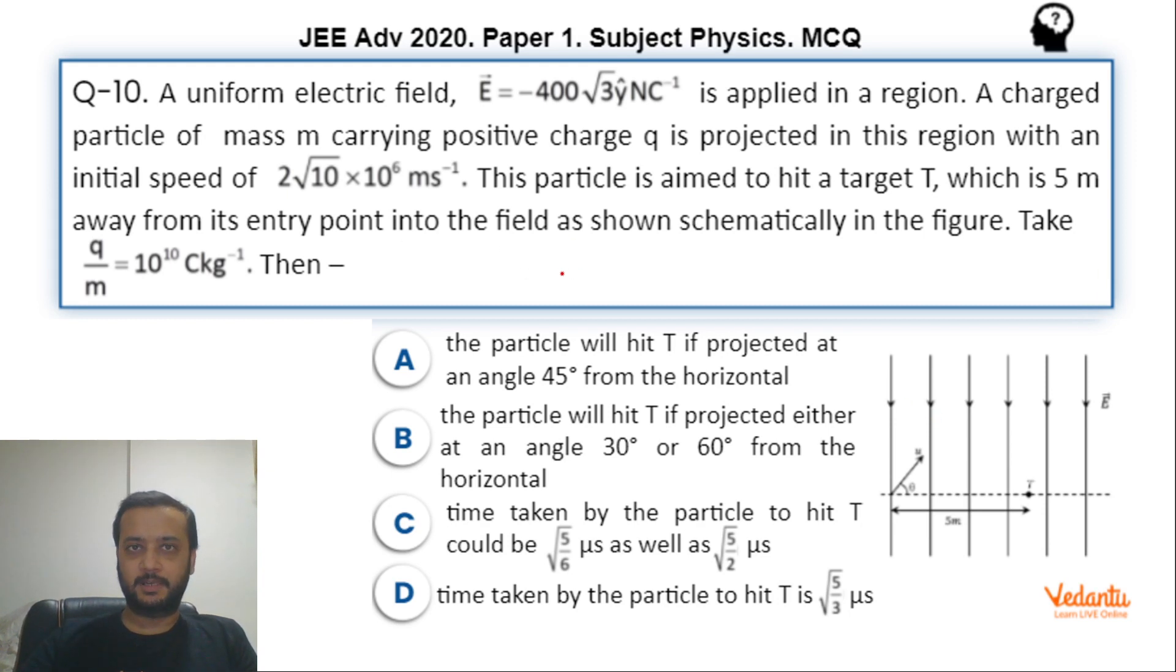Since gravity ki value question me kahi mentioned nahi hai and he bhi kahi aisa diya nahi hai ki this is a vertical plane, we could have easily ignored gravity. Although if they explicitly mentioned this it would be better, but anyway they have not given the value of gravity and not said this is a vertical plane so we will ignore the gravity. As such there is no difficulty in this question, so let's see how we solve it.